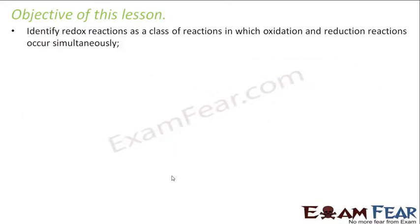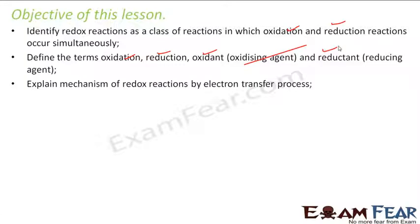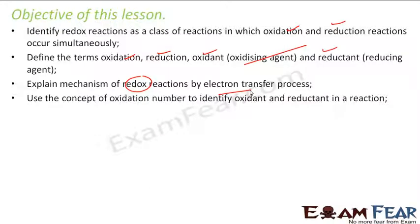The objective of this lesson is to identify the redox reactions as the class of reaction in which oxidation and reduction occurs simultaneously. We'll talk about oxidation and reduction, define the terms oxidation, reduction, oxidant, and reductant. We'll explain the mechanism for redox reaction in terms of electron transfer process. We'll also use the concept of oxidation number to identify oxidant or reductant in the reaction.